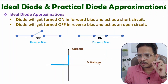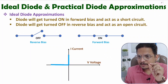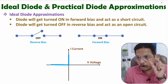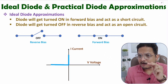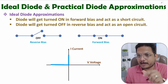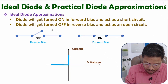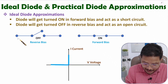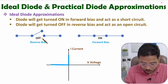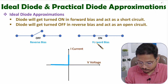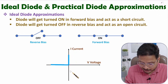When you talk about ideal diode approximation, one thing you should know is: in forward bias, the diode is considered as ON and it acts as a short circuit. In reverse bias, the diode is considered as OFF and it acts like an open circuit. So it is acting like a switch — off in reverse bias and on in forward bias.